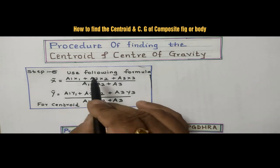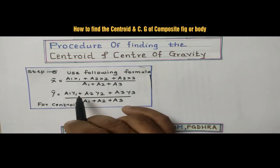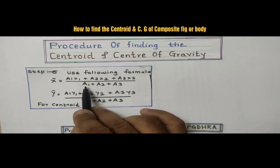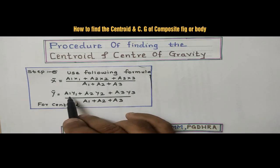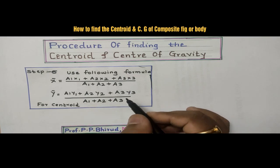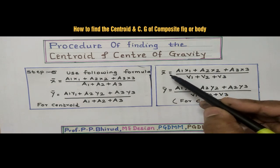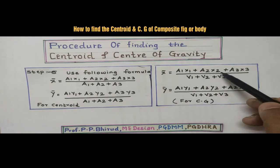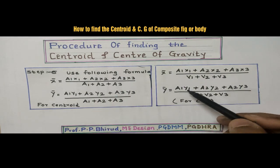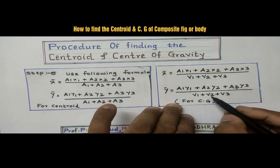Then, step number six: use the following formula for calculating x-bar and y-bar. For centroid, x-bar equals (a1·x1 + a2·x2 + a3·x3) / (a1 + a2 + a3). Similarly, y-bar equals (a1·y1 + a2·y2 + a3·y3) / (a1 + a2 + a3). For CG, we calculate volume, so x-bar equals (v1·x1 + v2·x2 + v3·x3) / (v1 + v2 + v3), and similarly for y-bar.